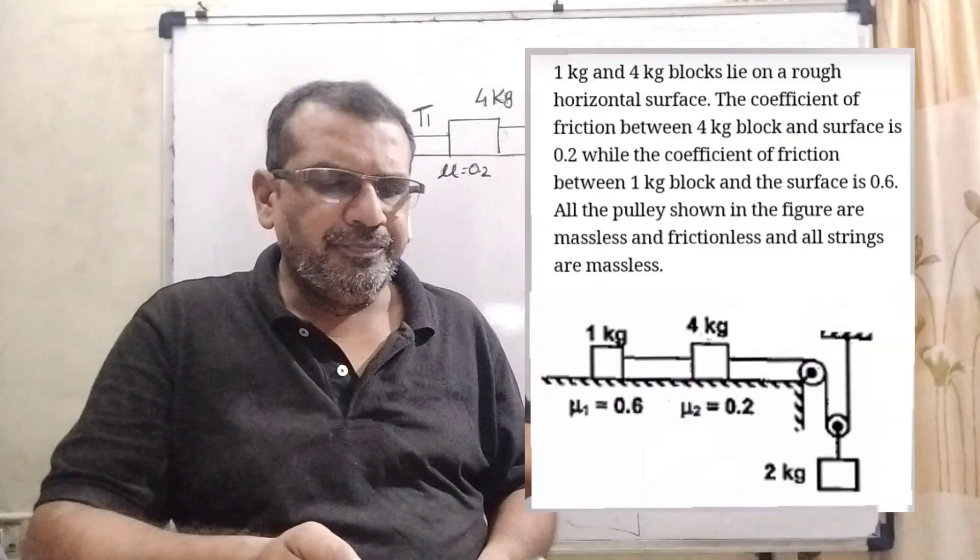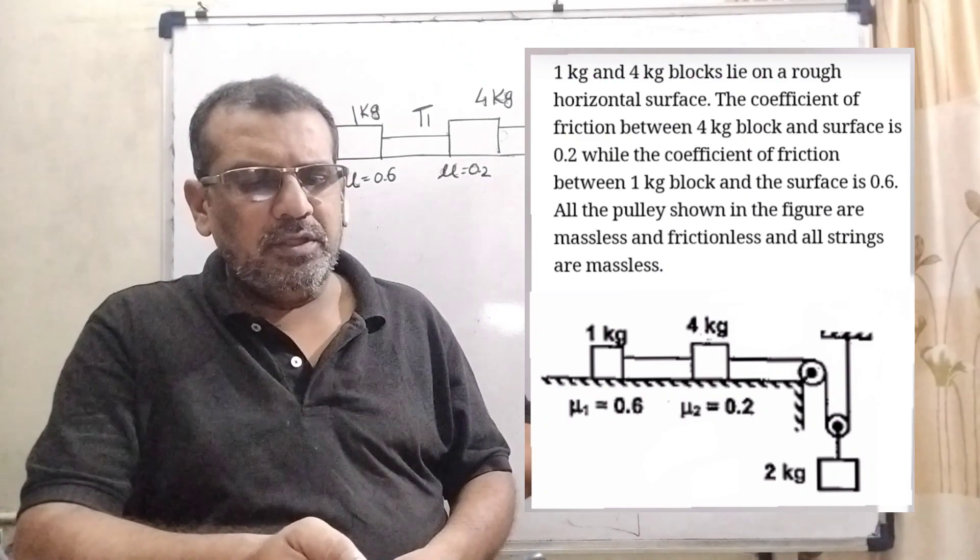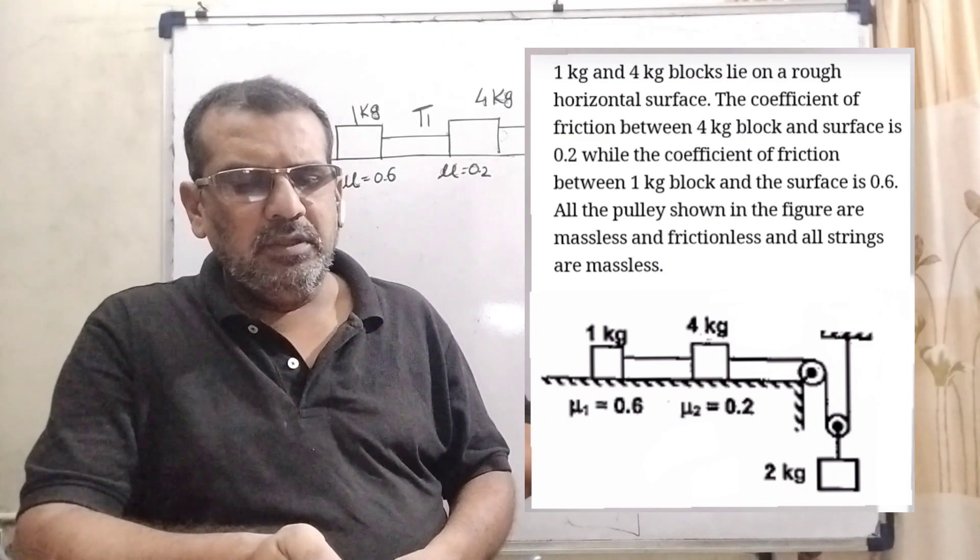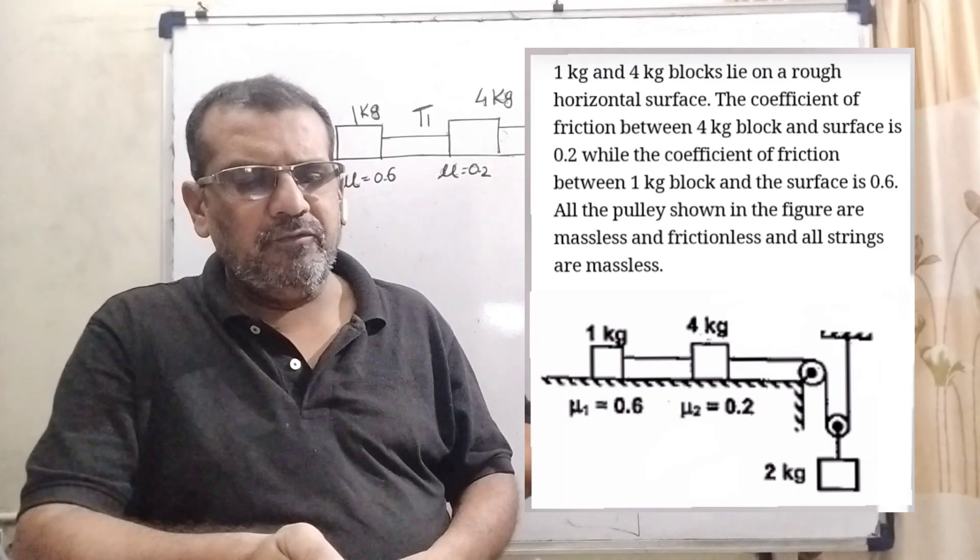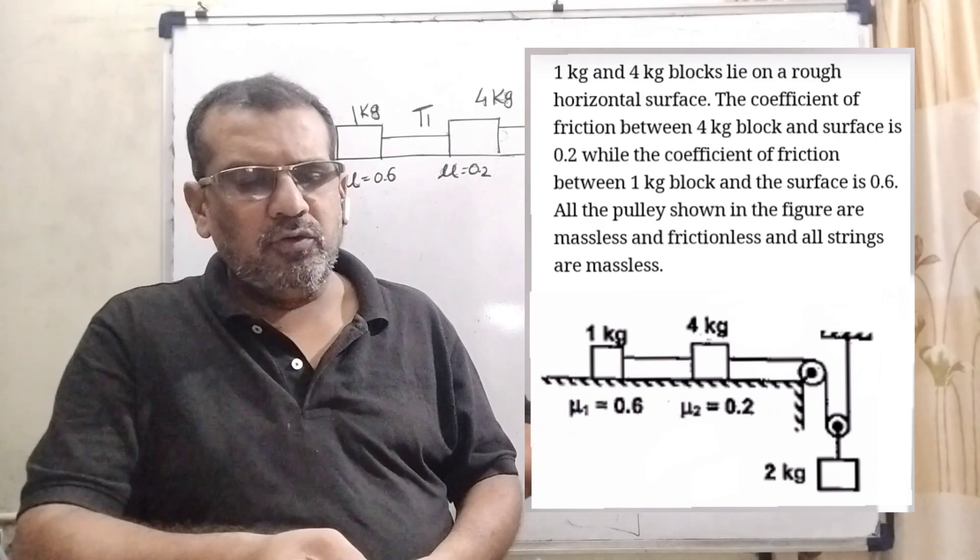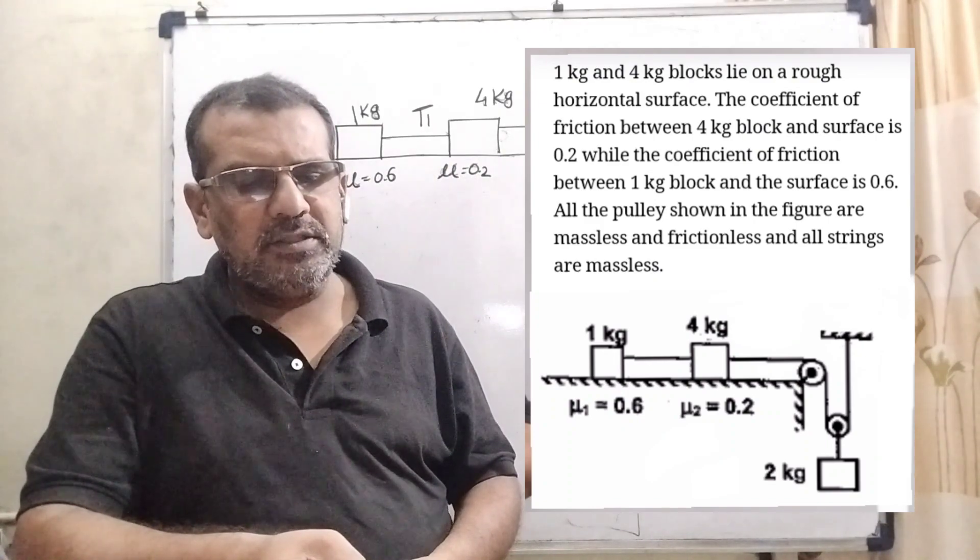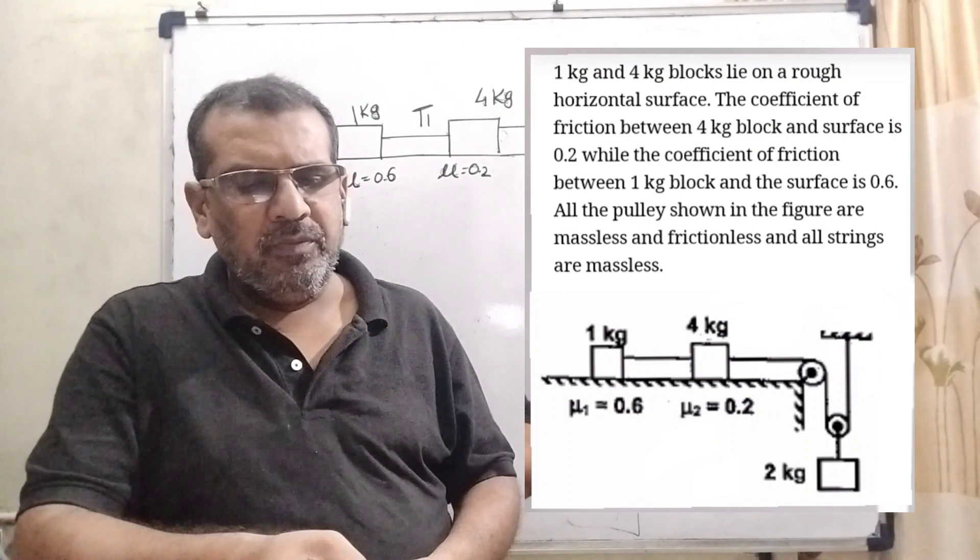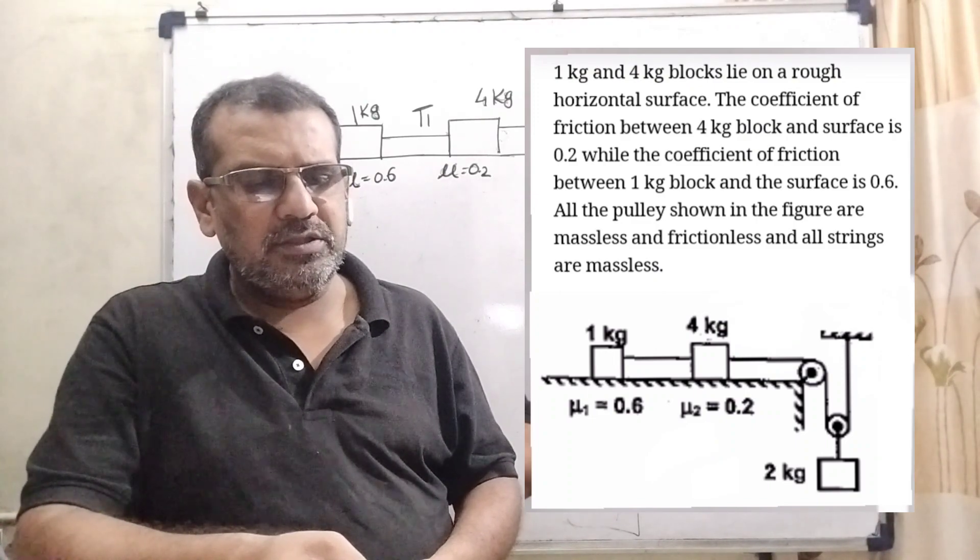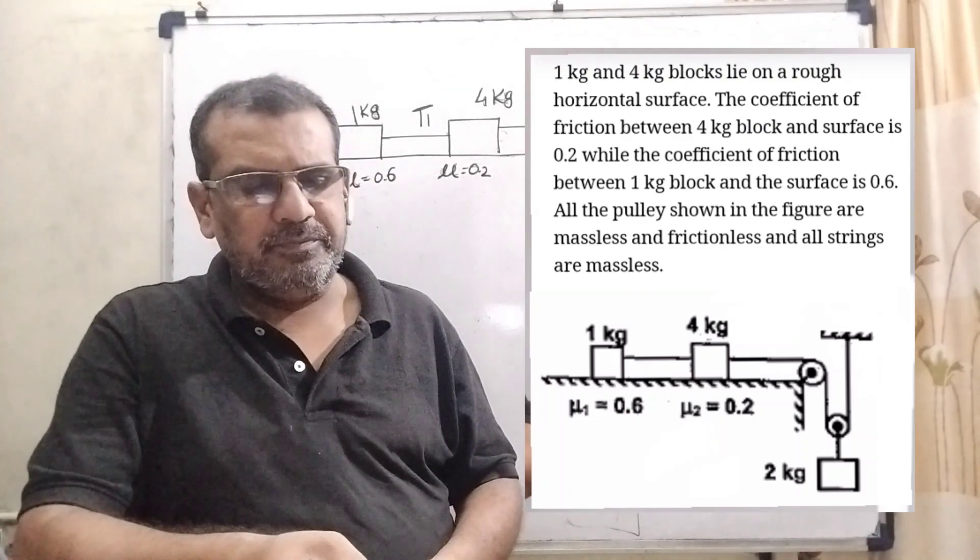Now here is the question. 1 kilogram and 4 kilogram blocks lie on a rough horizontal surface. The coefficient of friction between 4 kilogram block and surface is 0.2 while the coefficient of friction between 1 kilogram block and the surface is 0.6. The pulleys and the strings shown in the figure are massless and frictionless.